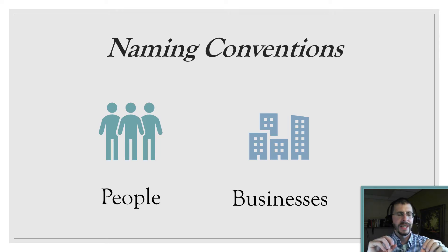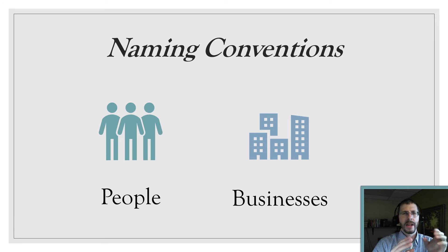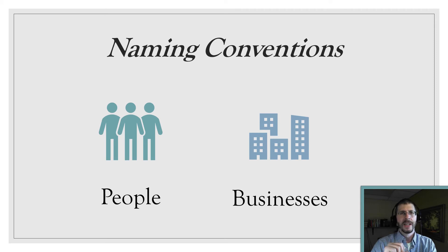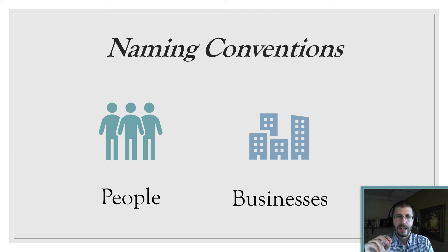One thing to think about on the preventative end is naming conventions, because you don't want to do this all the time. For people, decide upfront: are you going to use their common name or their proper name — Bob or Robert, Jeff or Jeffrey? For businesses, I lead with the city name, so I'd say 'Sioux Falls First United Methodist Church.' Get a consistent rule in your head and stick to it.